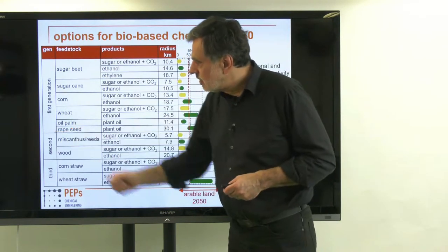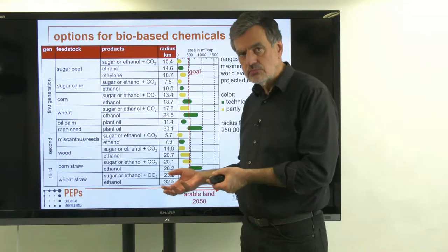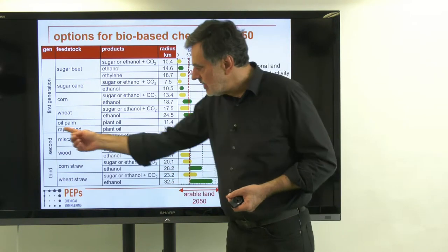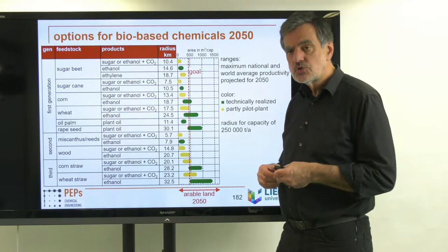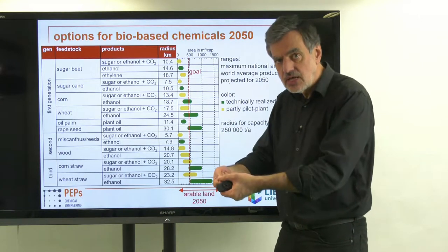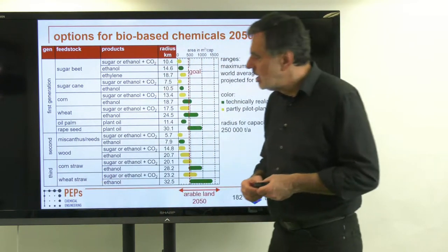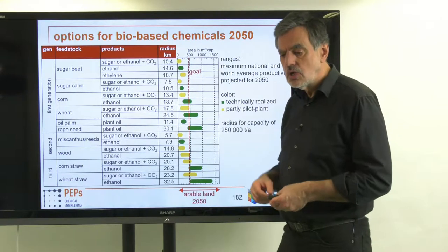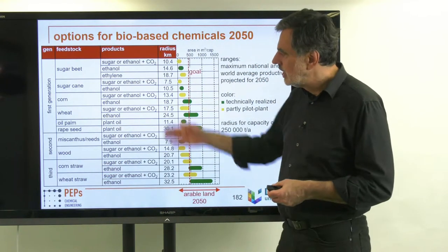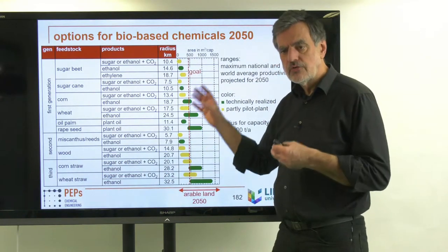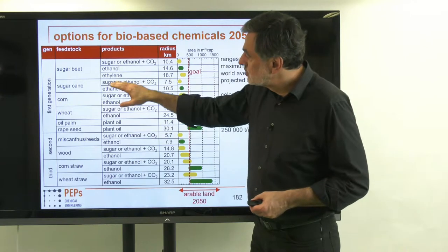First-generation crops can be directly used as food — they compete directly with food. Second-generation biomass competes with food production for the same land area. Third-generation biomass relates to waste products from food production, such as corn straw and wheat straw. I have selected only representative examples here because all options would not fit on screen. We can also use different pathways for each crop.